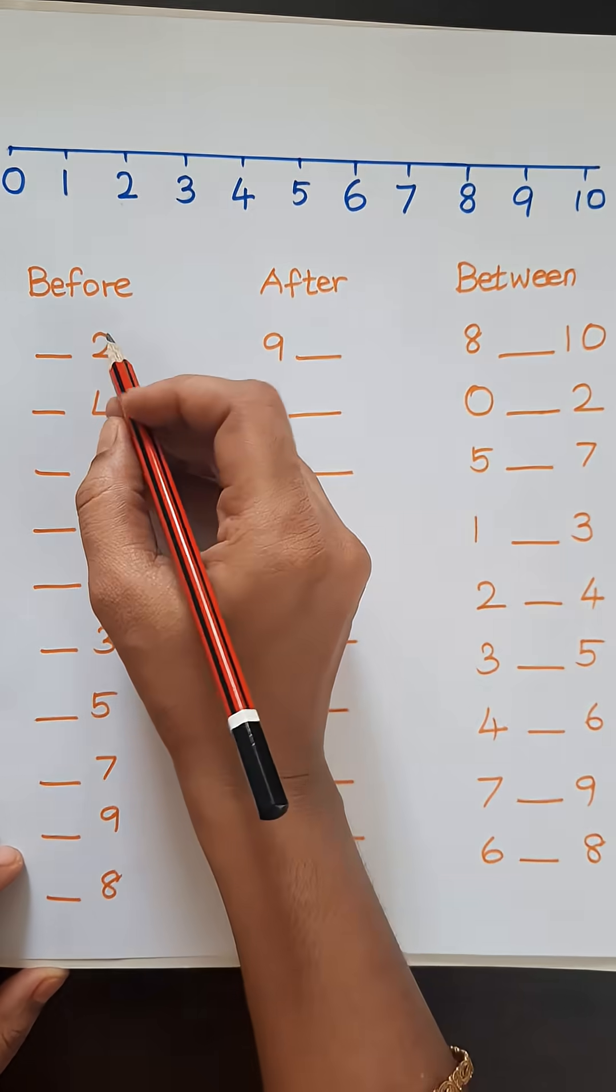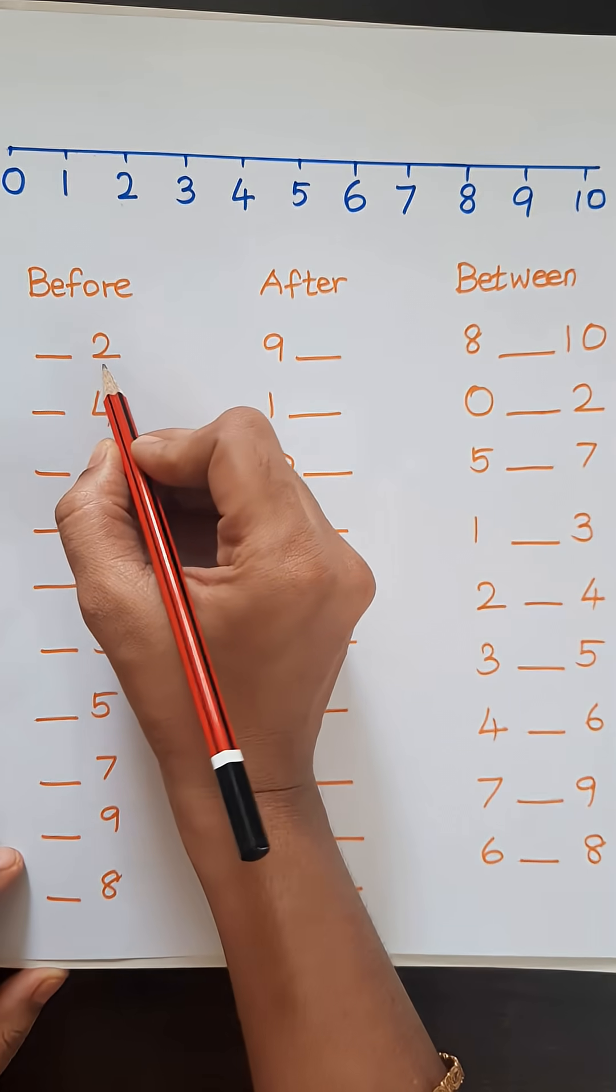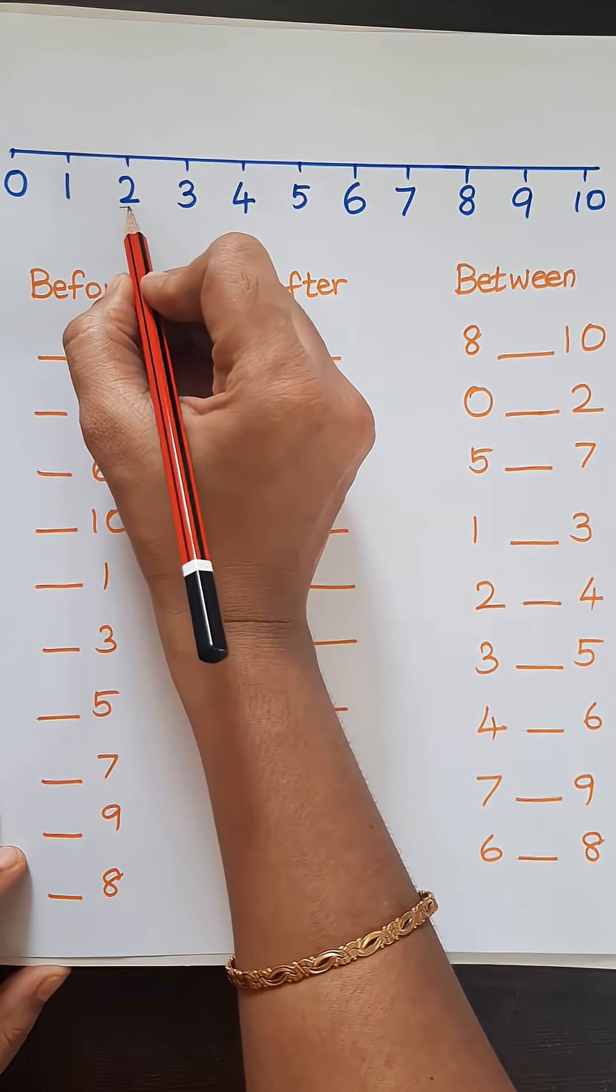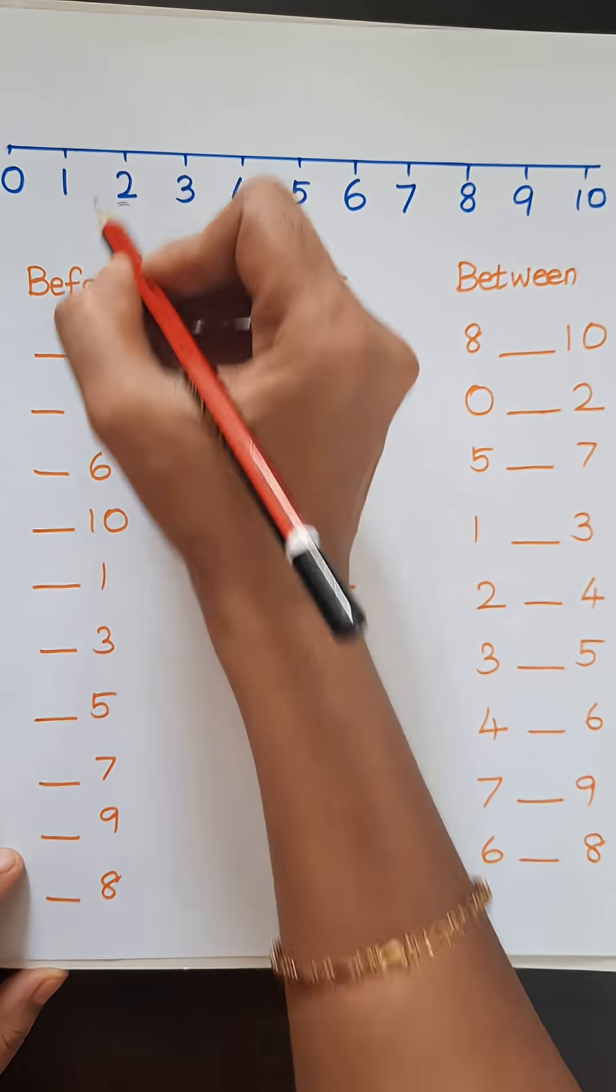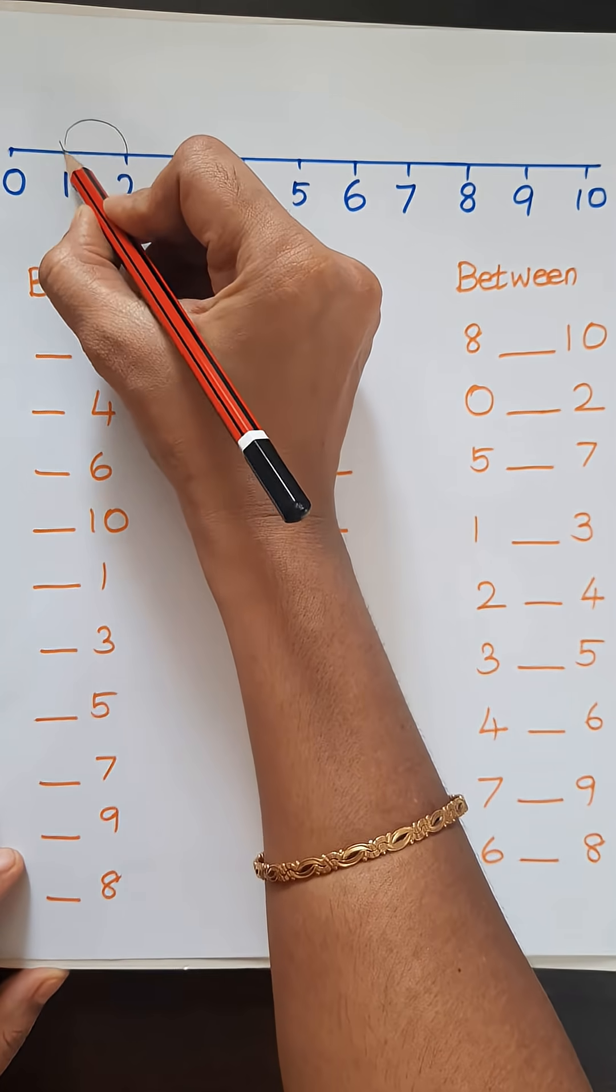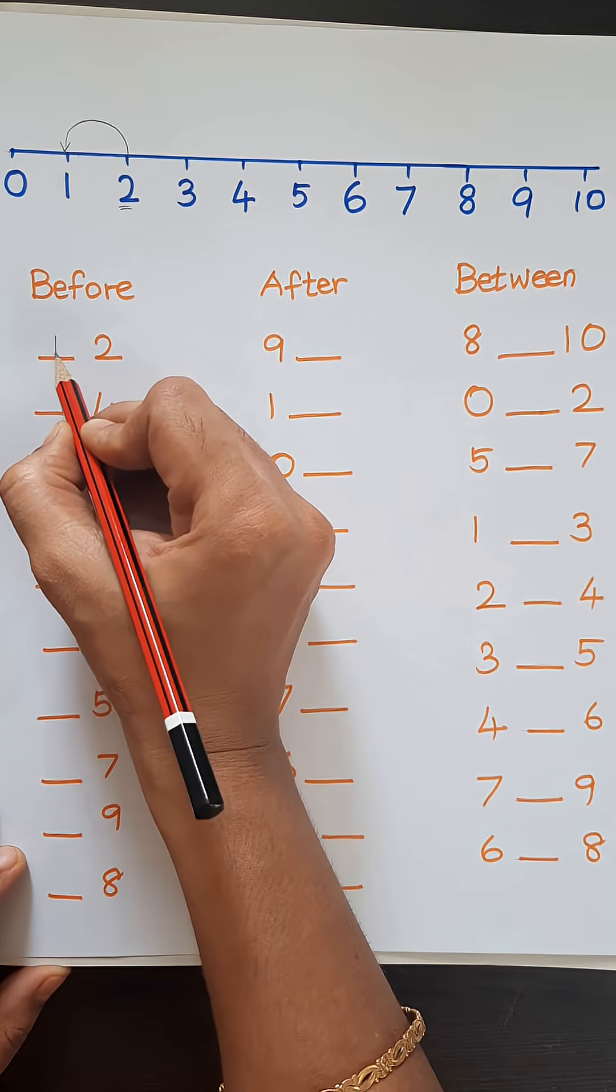So first we will do before. Here the given number is 2. So we will find the number 2 in the number line. So what comes before 2? 1. So we will write 1 here.